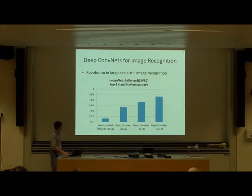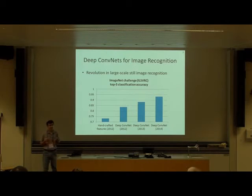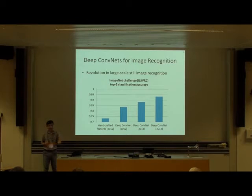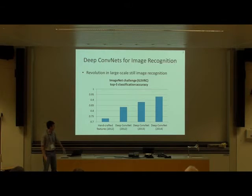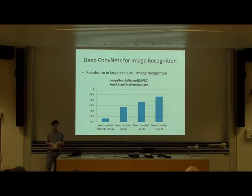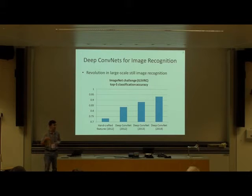At the same time, in the image recognition field there was a revolution over the last few years, which basically started in 2012 when the team from Toronto won the ImageNet challenge. From 2012 onward, these deep convolutional architectures have been improving with each year — for instance, results have improved by 5.2% — and these deep results keep improving.